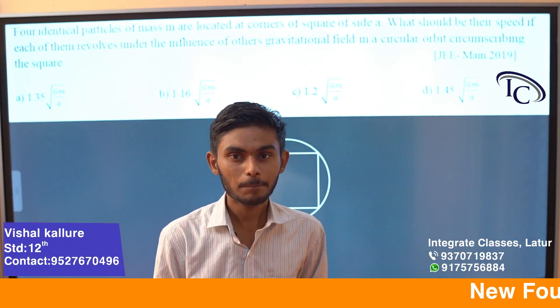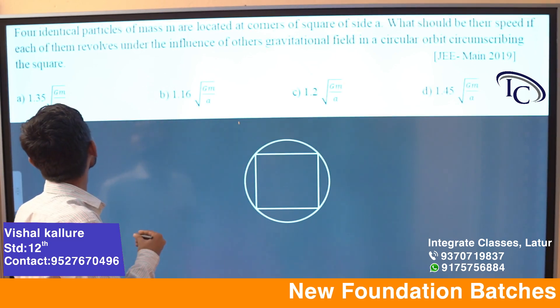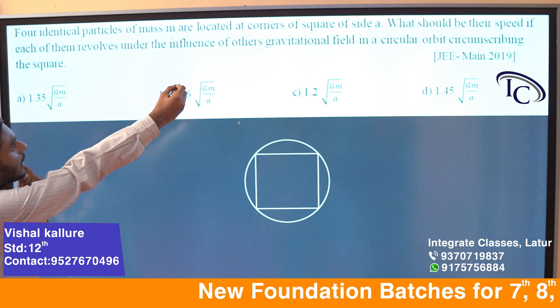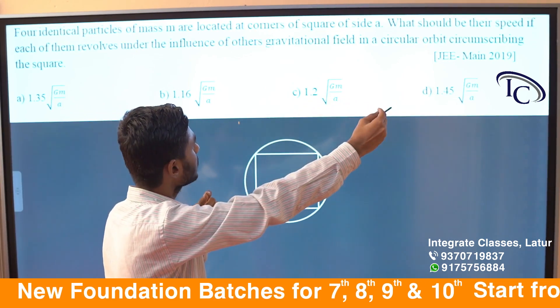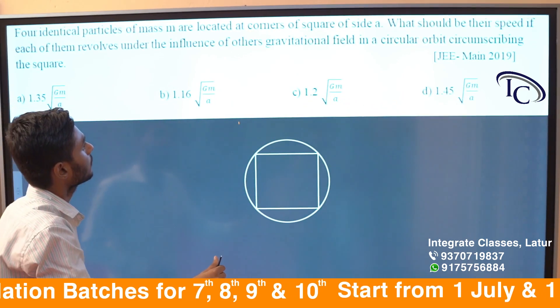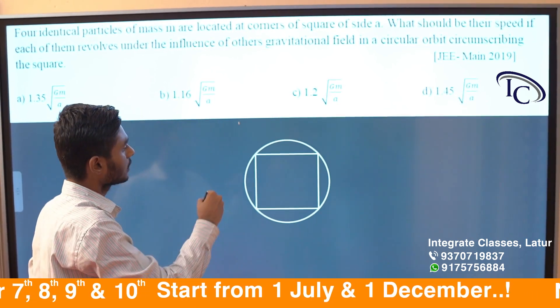Hello everyone, I am going to talk about this question. The question is: 4 identical particles of mass m are located at the corners of a square of side a. What should be their speed if each of them moves under the influence of others' gravitational field in a circular orbit circumscribing the square?